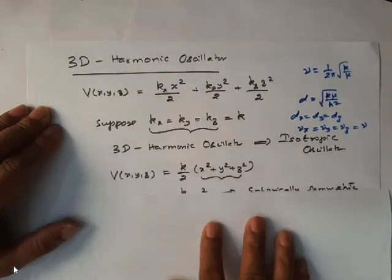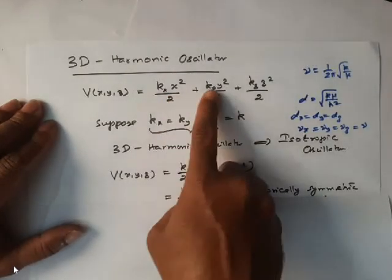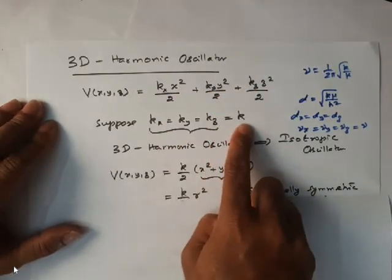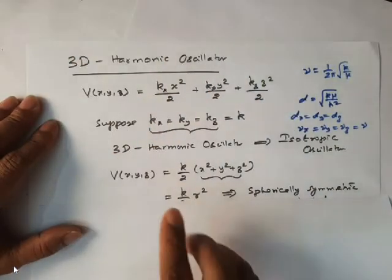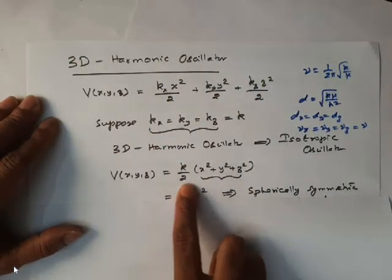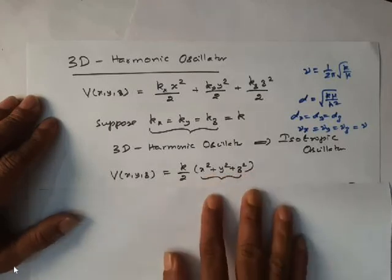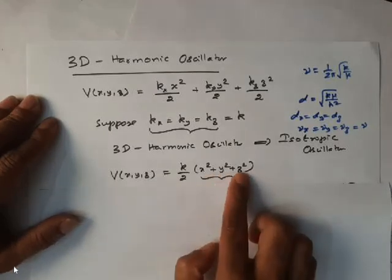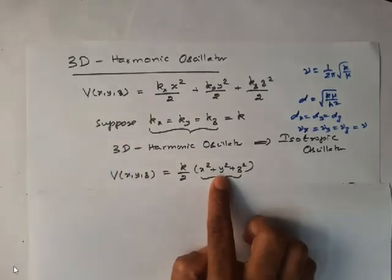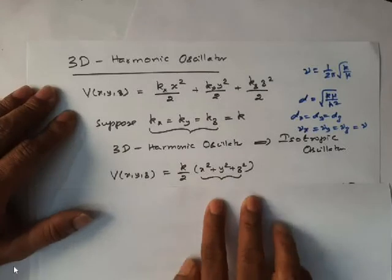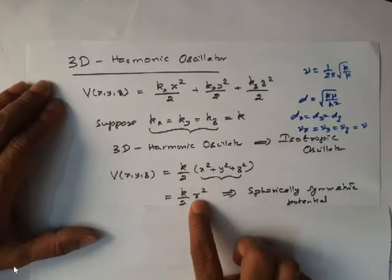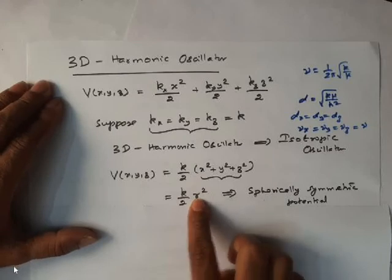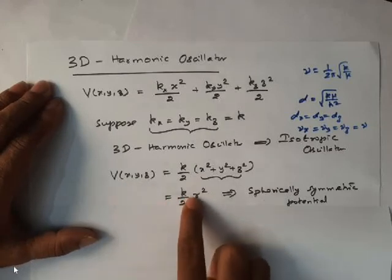Since kx, ky, kz are equal, which are equal to k, I can substitute k throughout and take k/2 as common. If I take k/2 as common, I will get x² + y² + z². Remember, x² + y² + z² is the equation of a sphere — it can be replaced by R, where R is the radius of the sphere. So potential energy now depends on R.